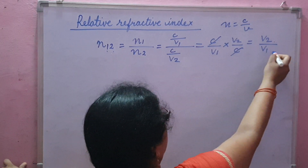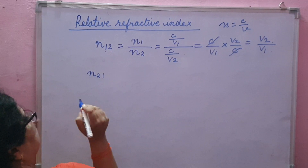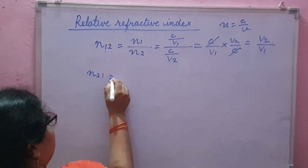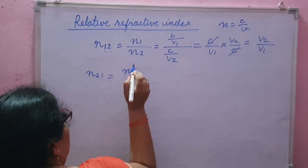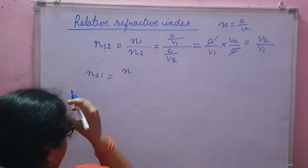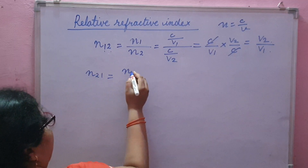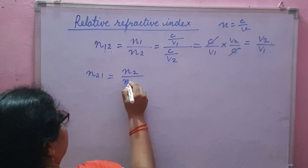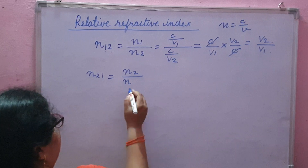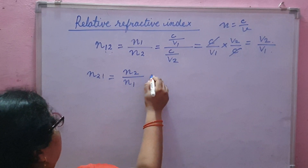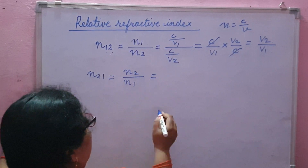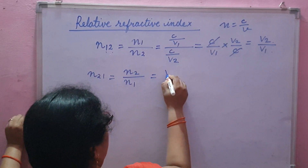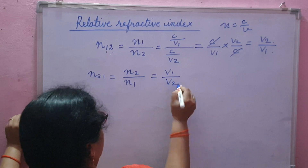Similarly, the refractive index of medium 2 with respect to medium 1 is equal to the ratio of refractive index of medium 2 with respect to refractive index of medium 1, and it is also equal to V1 upon V2.